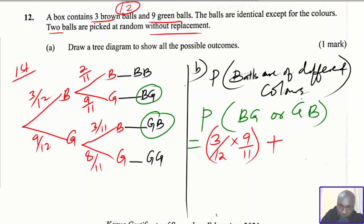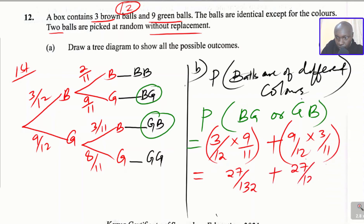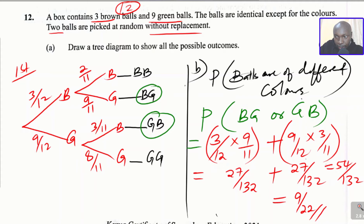For the green-then-brown branch, the probability of green is 9/12 multiplied by brown which is 3/11. Multiplying gives 27/132 for each. Adding them: 27/132 plus 27/132 equals 54/132. When you simplify, you get 9/22. So the probability that the two balls picked are of different colors is 9/22.